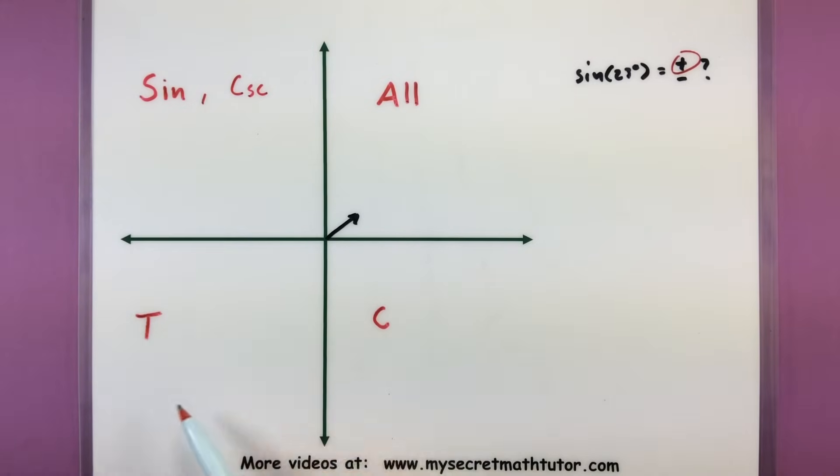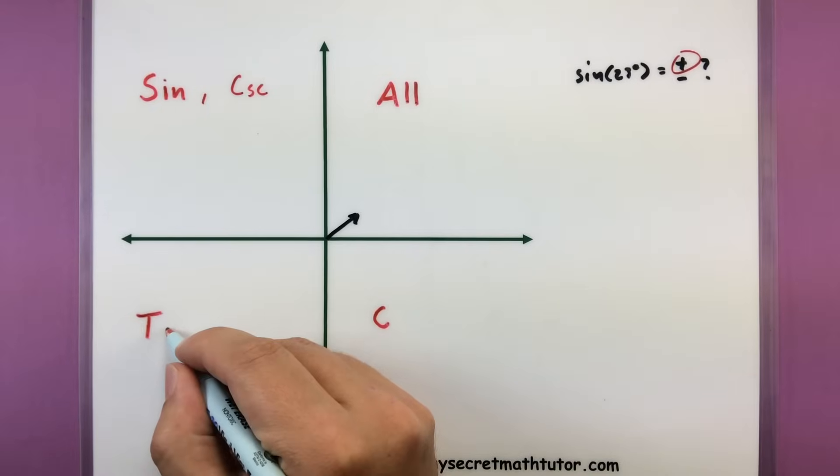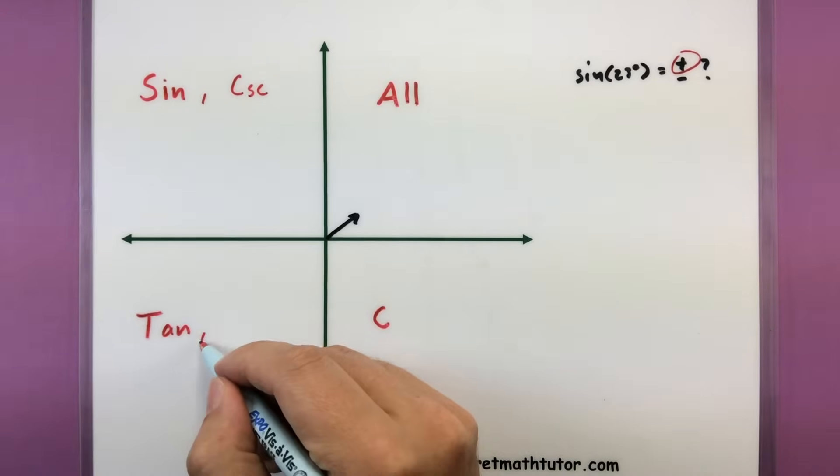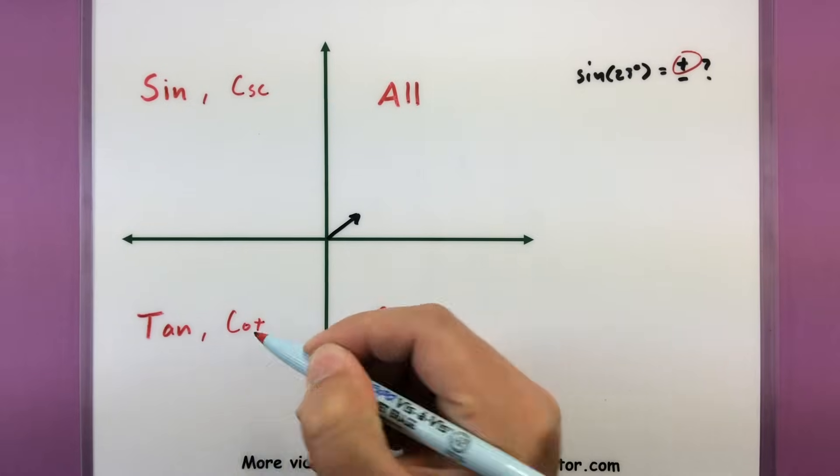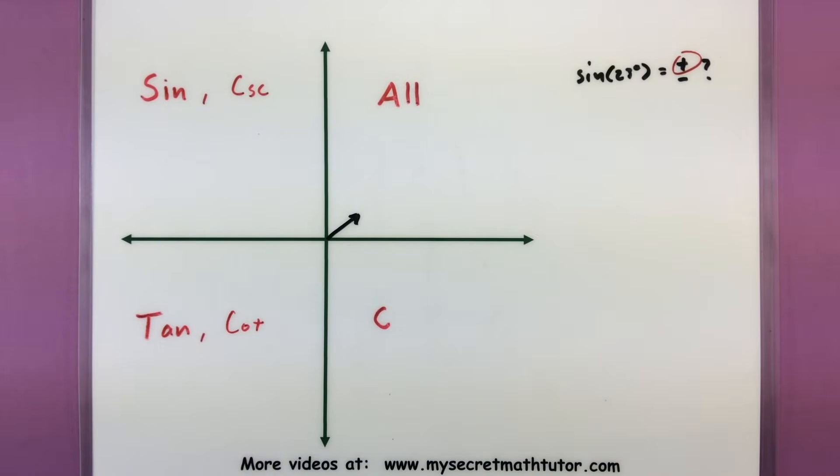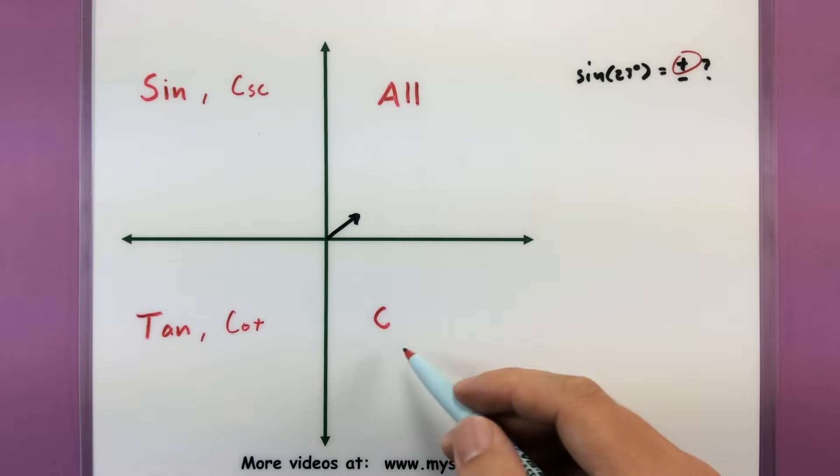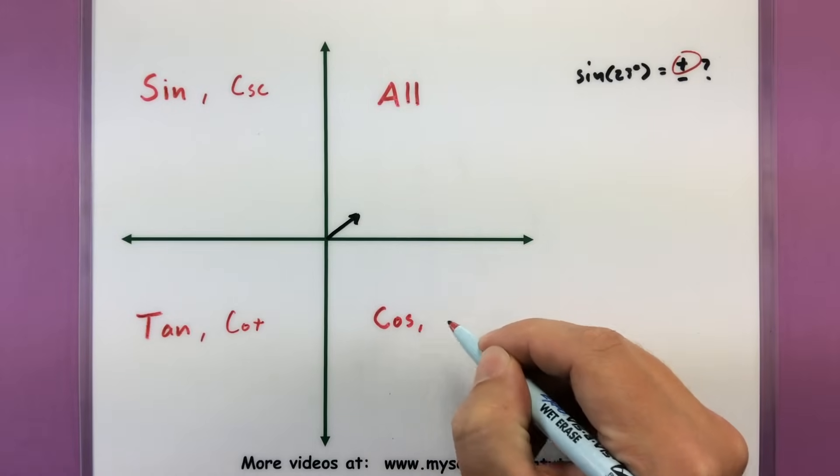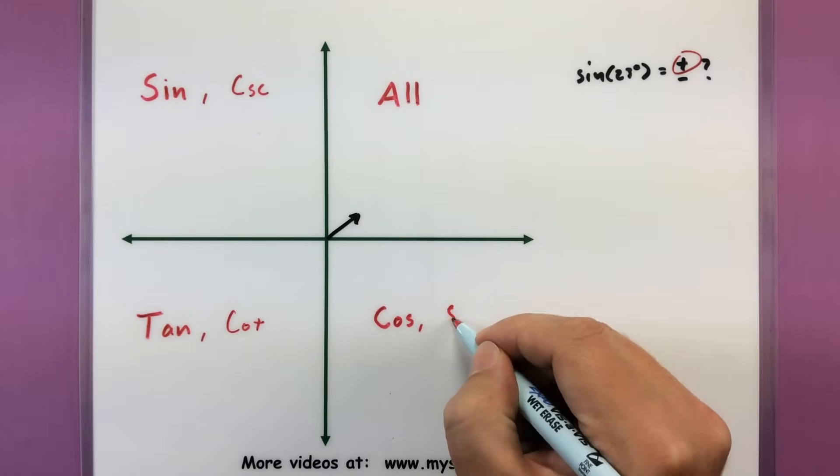Moving on, who's going to be positive in the third quadrant? T. We only have one trigonometric function that starts with T - that's tangent. And if you want to remember, cotangent is the other one, so tangent and its reciprocal. And then the last one, who gets to be positive over here? Cosine and its reciprocal function secant.